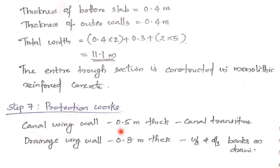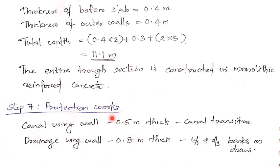Step 7: Protection works. Canal wing wall thickness = 0.5 m, transition rate 2:1. Drainage wing wall thickness = 0.8 m — it acts like a guide bank to protect the abutments from drainage flow. By this, the design of the aqueduct is complete. The numerical solution carries 25 marks, and the drawing section also carries 25 marks. This is the most important design in Module 3 and has been asked most frequently in past question papers.